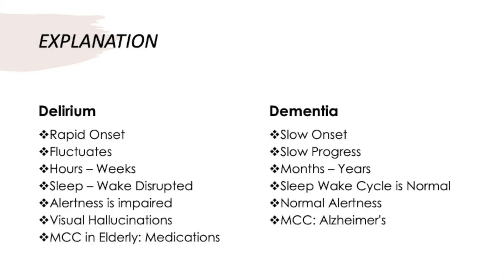We already know delirium features: rapid onset, visual hallucinations, so the third option is out. The key differences: delirium is rapid onset and fluctuates — the patient has periods of normalcy — lasting hours to weeks. The sleep-wake cycle is often disrupted; they are sleepy and don't know whether it's day or night. Alertness is impaired. The most common cause in the elderly is medications — not UTI, which is a common myth.